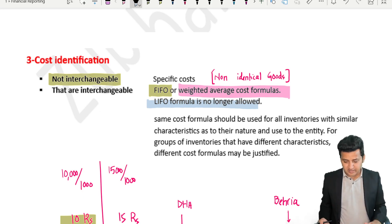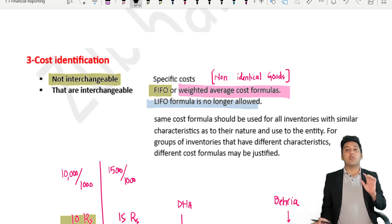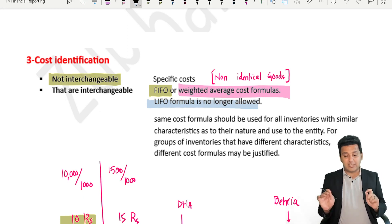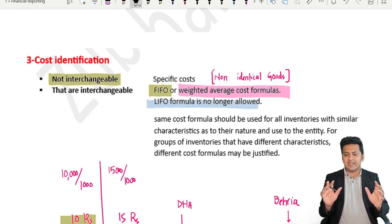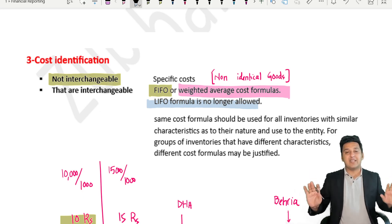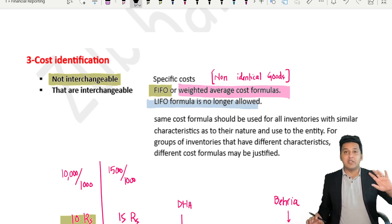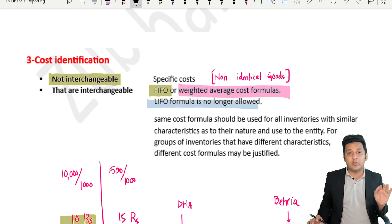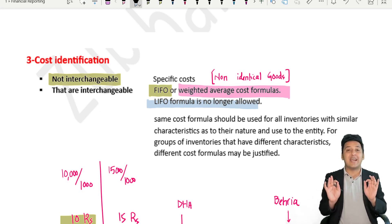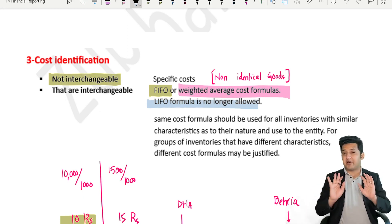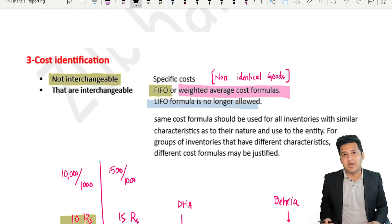Another theoretical MCQ: can a company use two formulas — FIFO for some inventory and weighted average for others? The standard says if characteristics are the same, use one formula. But if characteristics are different, they can use FIFO for one type and weighted average for another. So yes, an organization can use two methods at the same time for different types of inventories.